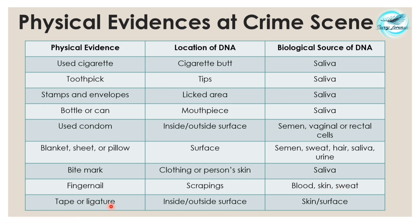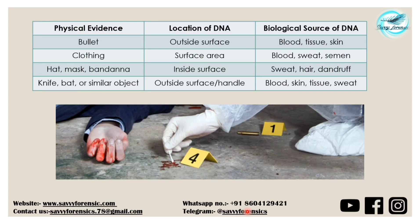Tape and ligature — both inside and outside surfaces are important. A bullet's outside surface contains blood, tissue and skin. Clothing, hats, masks, knives, bats and similar objects are all potential sources of biological evidence that is DNA. We have to keep in mind that the biological evidences in this table are not limited to it — there are innumerable sources of biological evidence. We must have knowledge of each and every kind, as it depends mainly on the scene of crime, and we must know how its examination and analysis takes place.